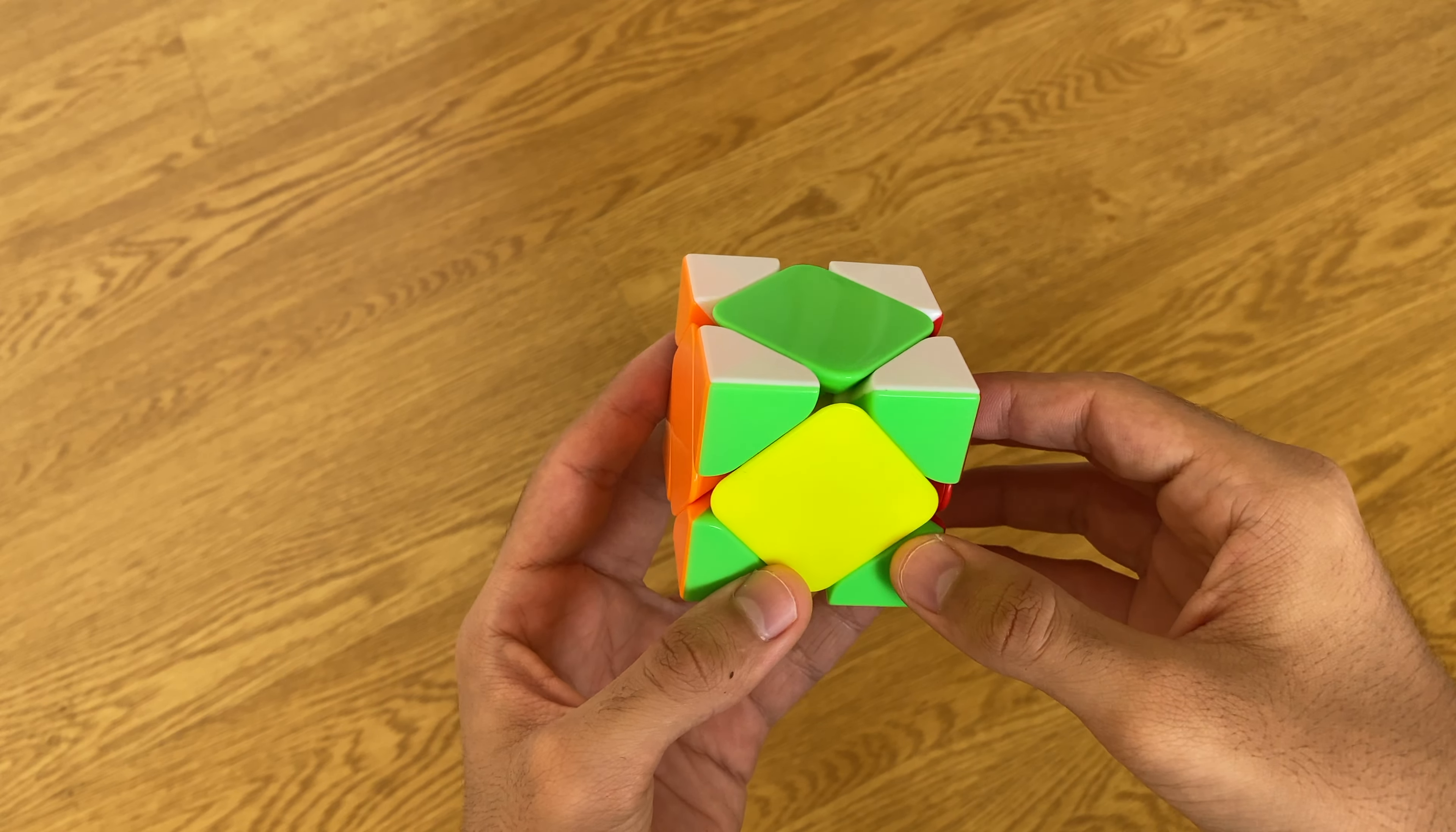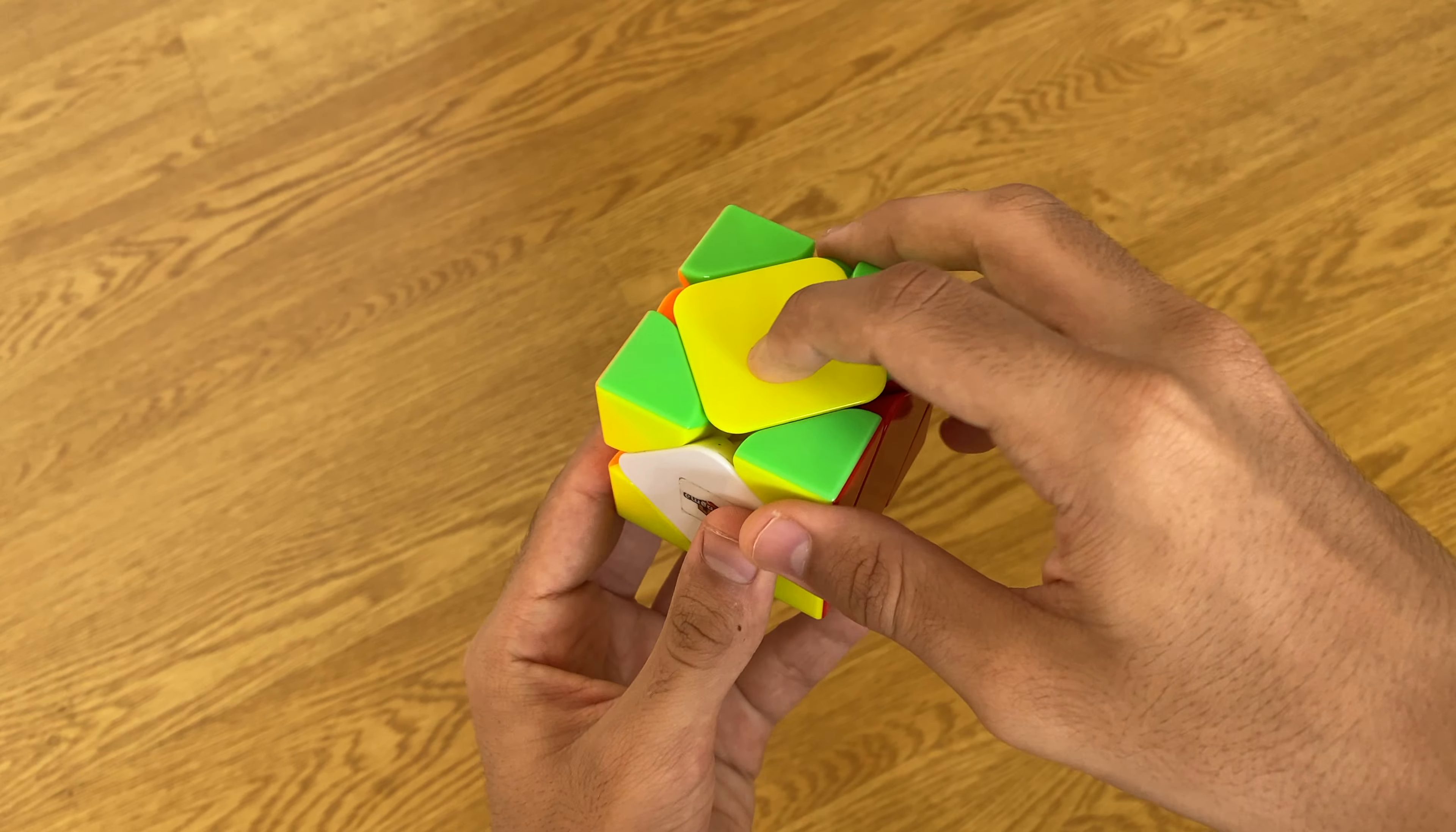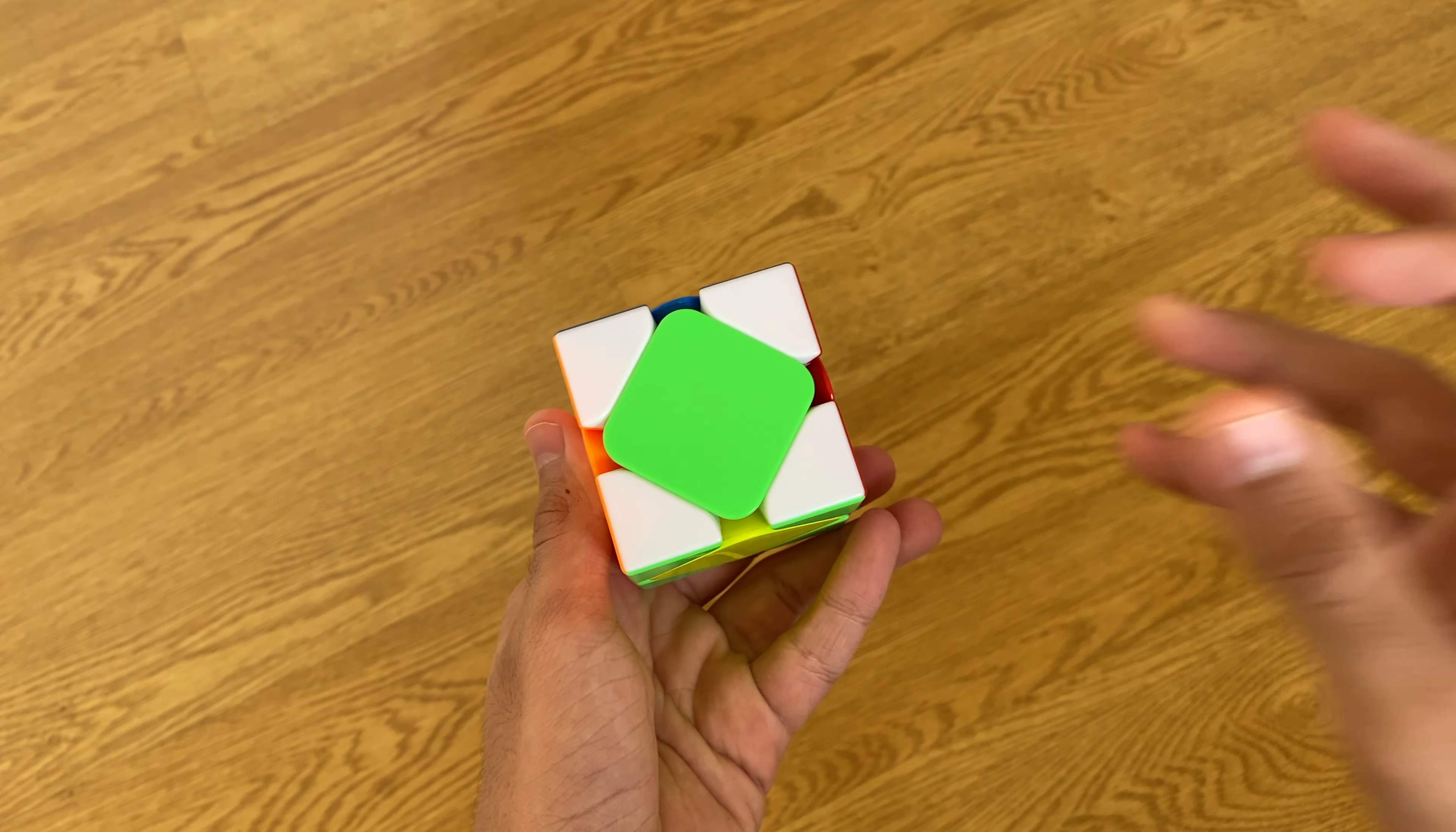For the other three colors, you notice that this color over here needs to go here, this color over here needs to go here, and this color over here needs to go here. So as you can see, it is a nice cycle of pieces.